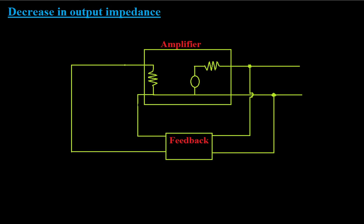Now let's discuss another advantage of using negative feedback in an amplifier — the decrease in output impedance. This is the last advantage we will discuss. We know that there is a large output impedance in an amplifier circuit, and that output impedance has to be decreased for better impedance matching, in order to connect it to low resistance loads. This can be achieved by using a negative feedback in an amplifier.